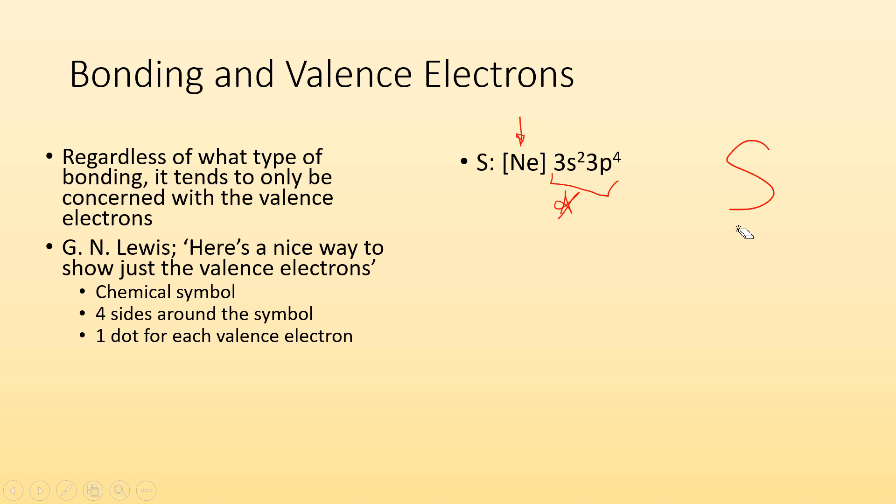Now, one dot will represent a valence electron. So if I take a look at the valence electrons for sulfur, I have a total of six valence electrons. So I got to put one dot for each electron around the sulfur. And you can have up to two on each side, and where you double up first is, it doesn't really matter, it's arbitrary.